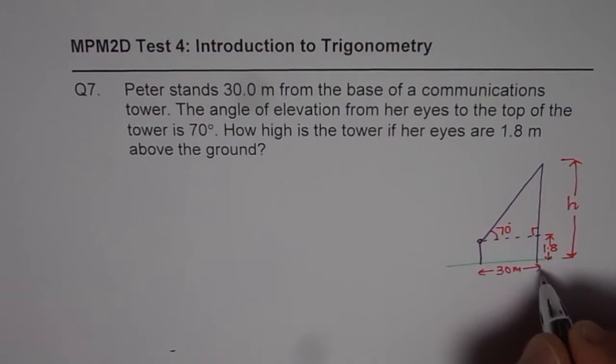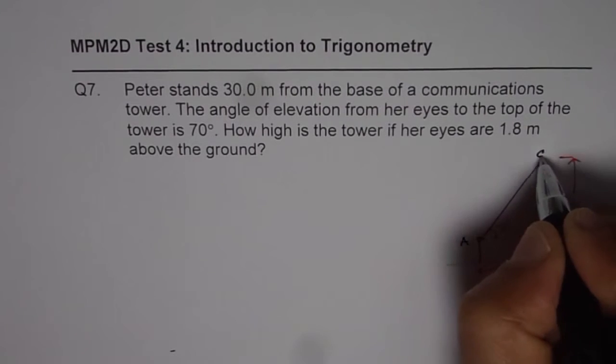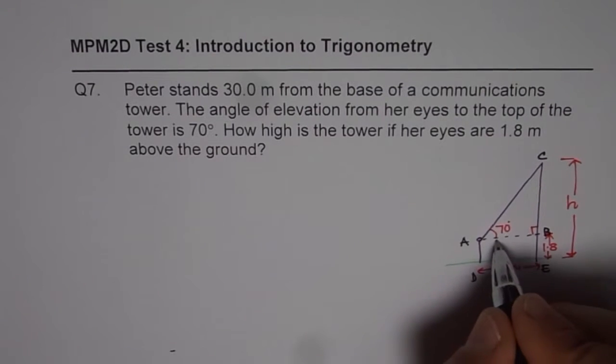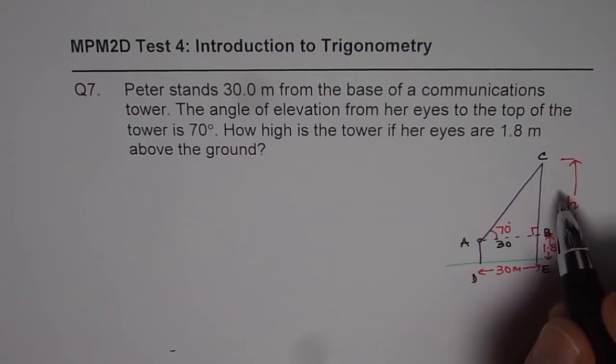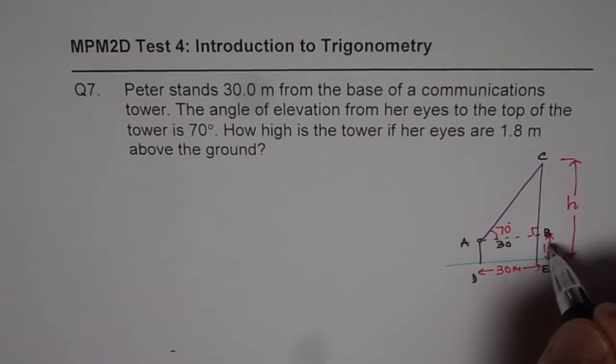So let us label it A, B, C and let us say this is D and E. In that case, we know AB is also 30 meters. Now we need to find the total height. Let us say CB. So total height H is CB plus BE.